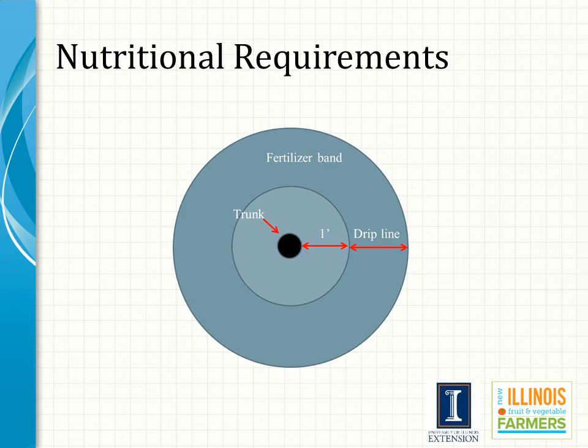Soil analysis is recommended every three years to provide the most accurate information to determine nutritional needs of an orchard beyond the initial pre-plant fertilizer recommendation. Soil analysis alone is not nearly as accurate in determining the nutritional status of the orchard because factors such as rootstock, crop load, soil type, and weather conditions influence whether trees are absorbing enough nutrients to produce maximum yields. The main value of a soil test is to monitor the soil pH.